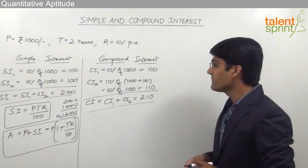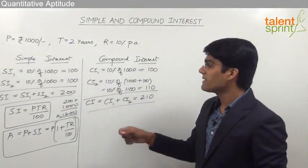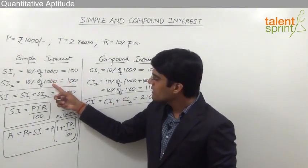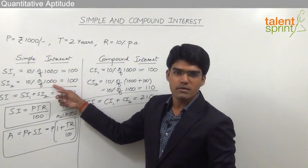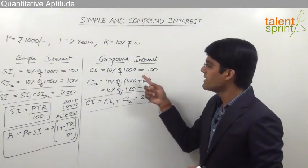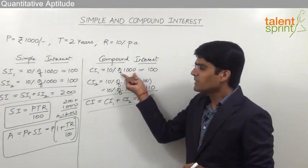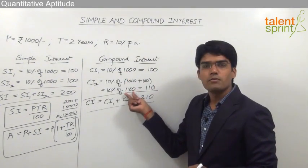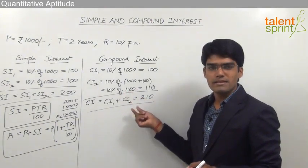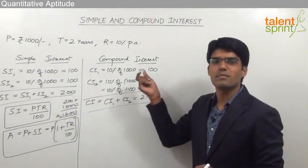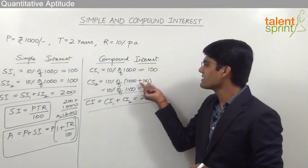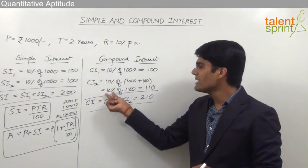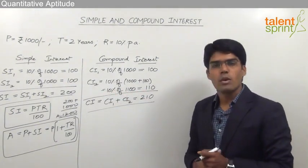The key difference between SI and CI is that in simple interest the principal remains constant — for first year it is 1000, for second year it is also 1000. But in compound interest the principal changes. For the first year the principal was 1000, but for the second year the principal becomes 1100. The principal for the second year is the principal of the first year (1000) plus the interest of the first year (100), giving 1100, and the interest is 10% of 1100 = 110 rupees.